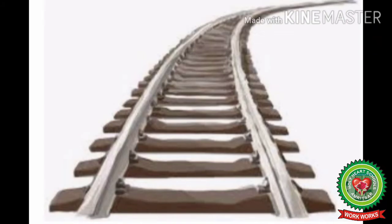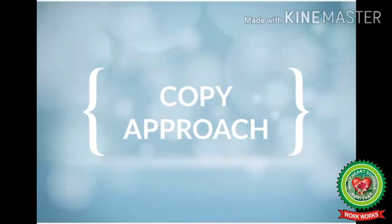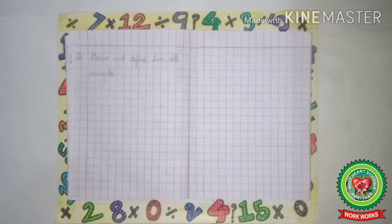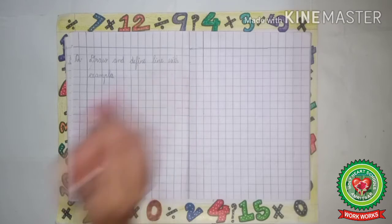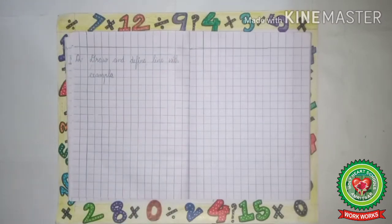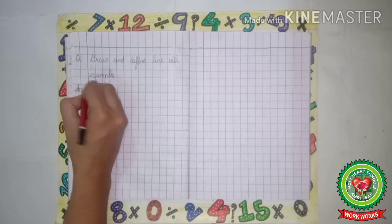Now let us learn how to draw and define a line on copy. Question is draw and define line with examples. So we will write its answer. After leaving one line we will write ans, answer, one dot.